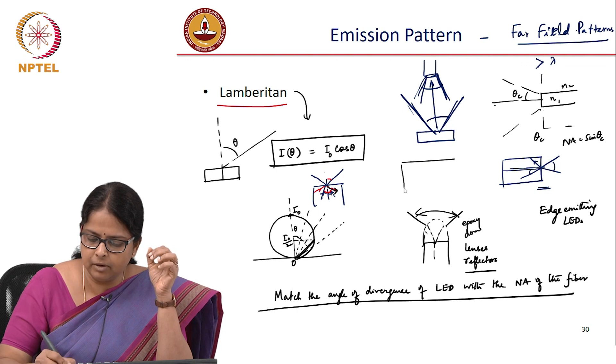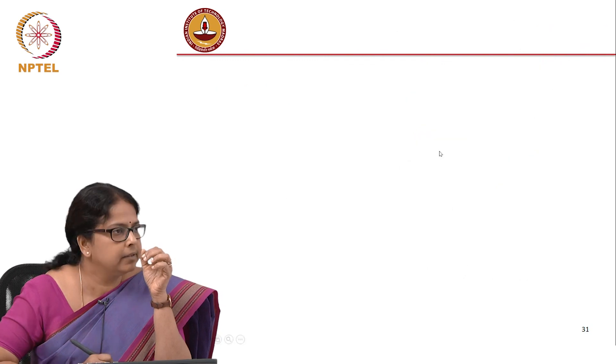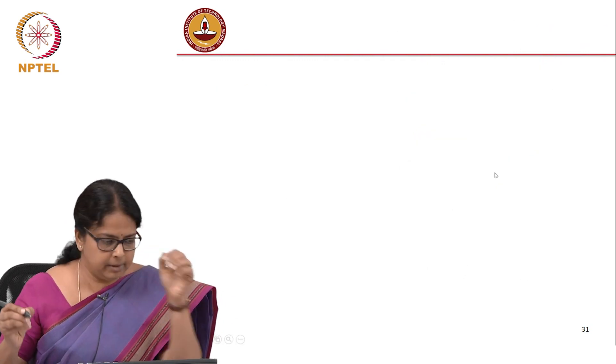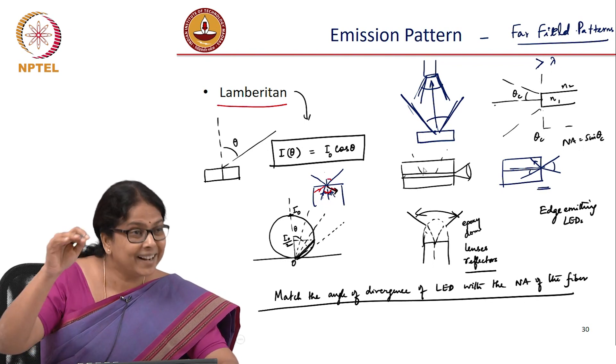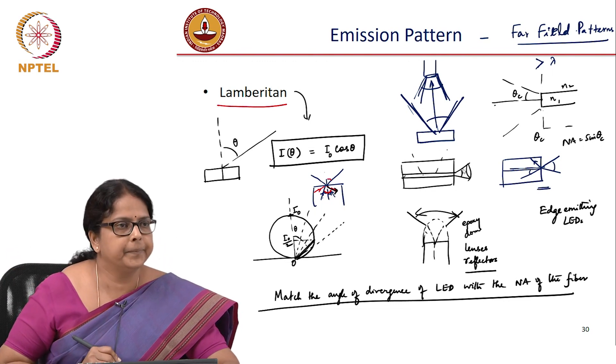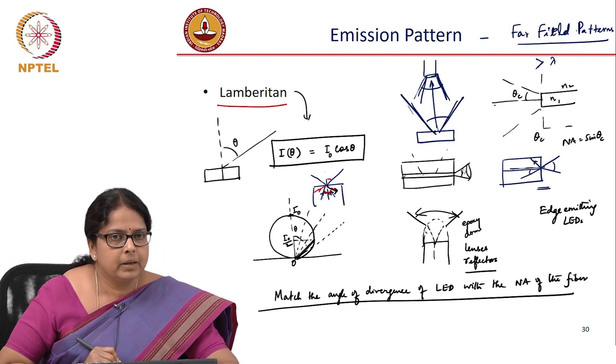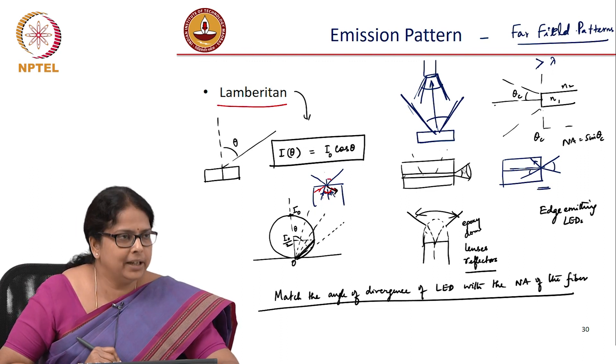If you remember the diagram of the P-N junction, the edge emitting, if this is the active region, the junction region, edge emitting LEDs emit from the side, whereas the surface emitting LEDs emit from the surface. You would like to have edge emitting LEDs so that you are ensuring some amount of guidance inside the double heterostructure and you can control this theta. So, that completes our discussion on LEDs.